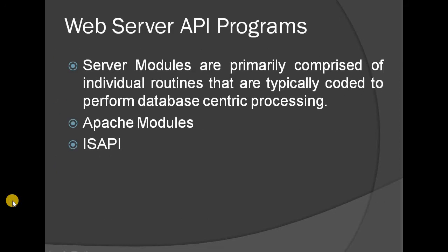Next is Web Server API programs, also called server modules. CGI is a very slow program — it is very slow.